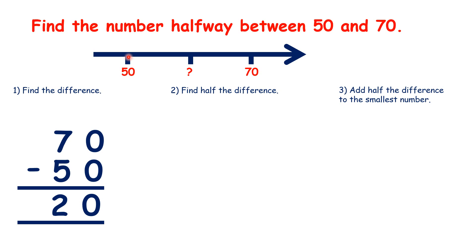So looking at our number line, we know that from 50 to 70 we have 20 numbers. The next step is to find half of the difference because we want to go halfway to our larger number to find the midpoint.